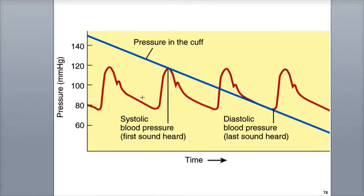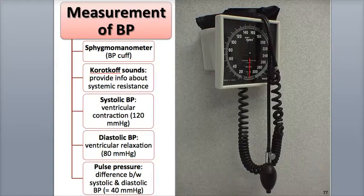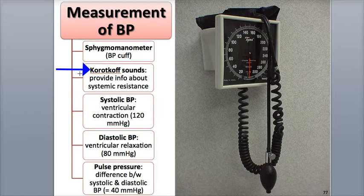Here we see a graph showing pressure in millimeters of mercury over time. This is the location where the first sound is heard as the pressure in the cuff is gradually released. These sounds are called the Korotkoff sounds.